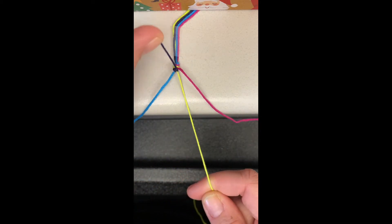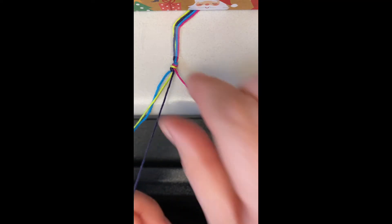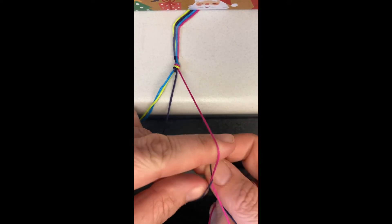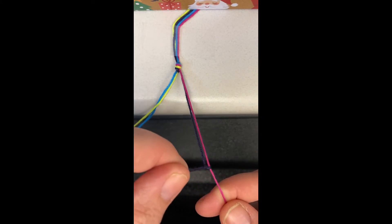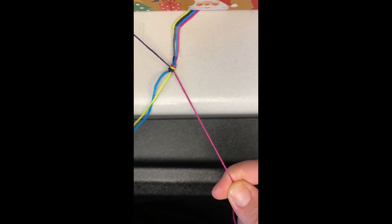The next step is to continue on with the next color, which is now the outermost strand. So you just want to continue to do this and repeat and repeat and repeat until the bracelet is long enough for you to wear.